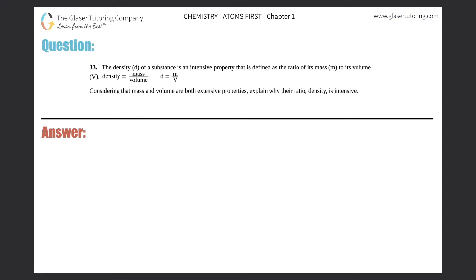Number 33. The density d of a substance is an intensive property that is defined by the ratio of its mass m to its volume v. So density equals mass divided by volume, or shortened to d equals m over v. That's a really important formula to memorize, by the way. Considering that mass and volume are both extensive properties...